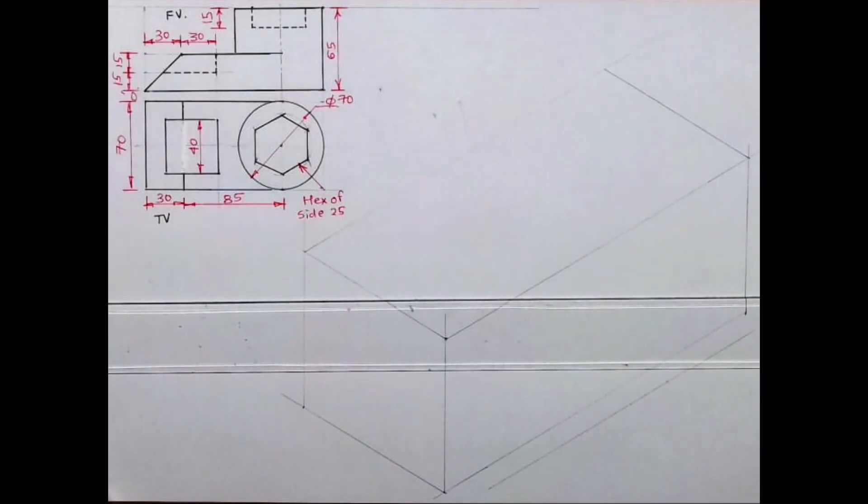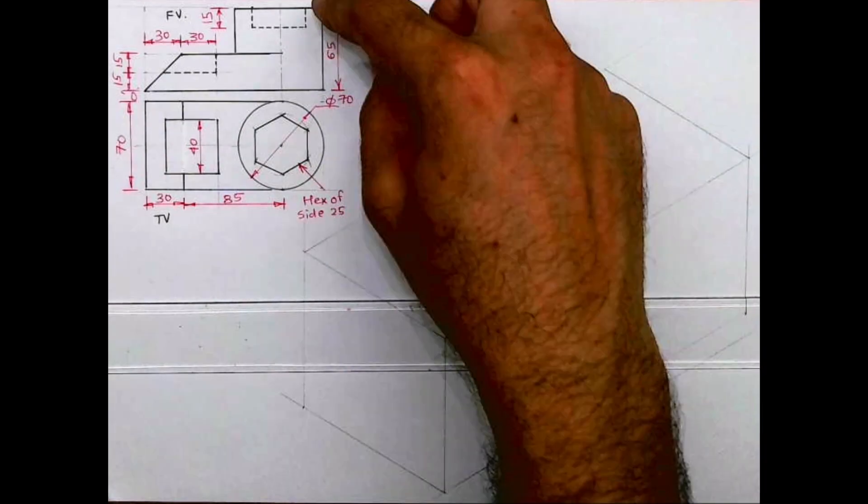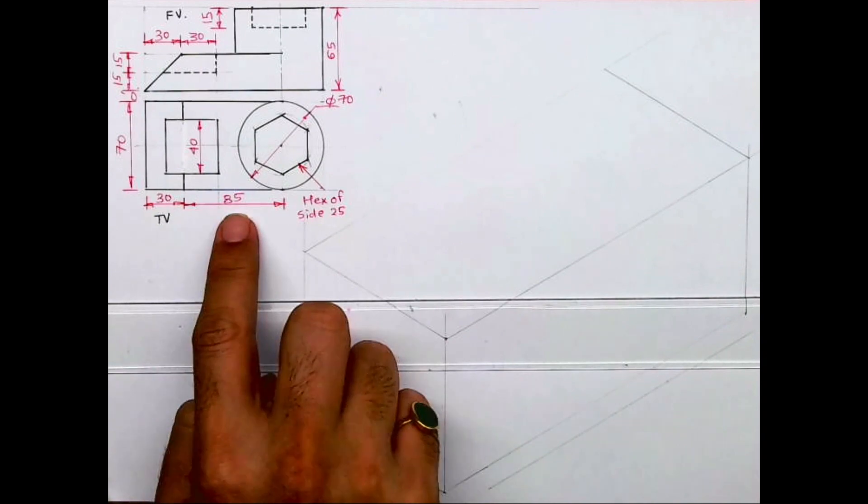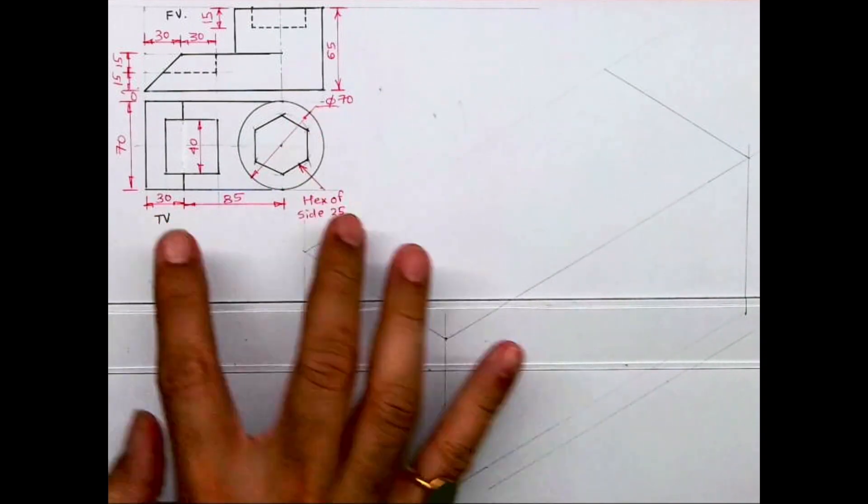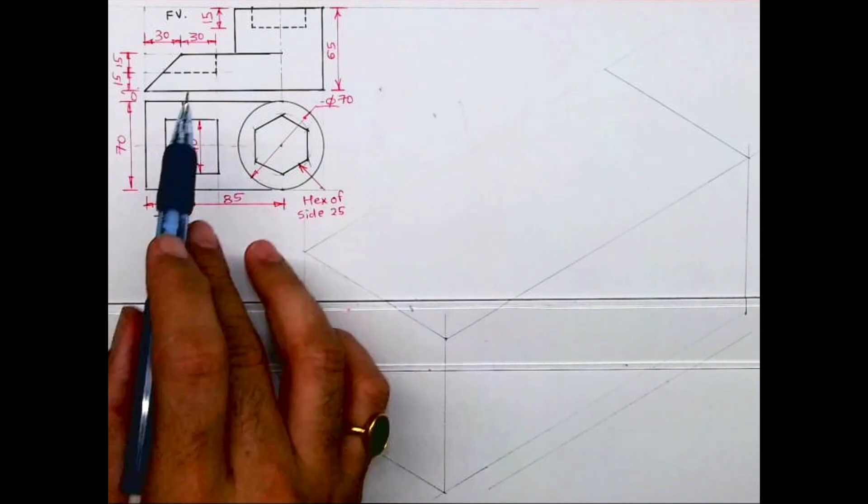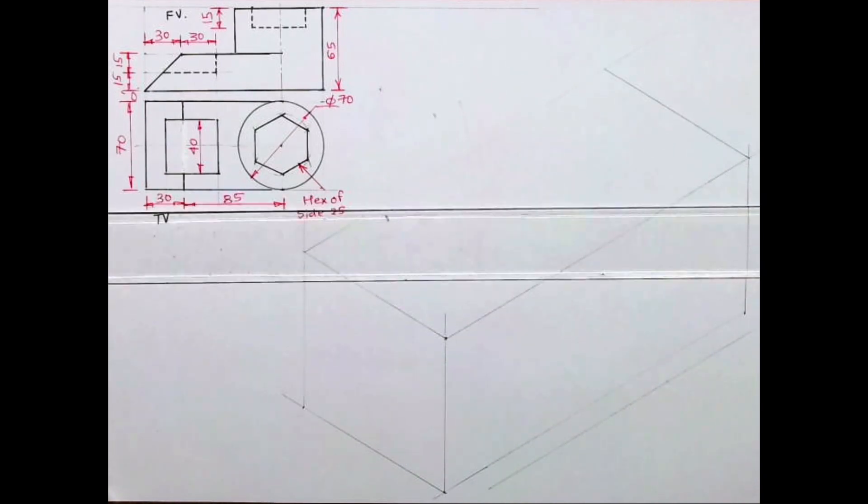Welcome to technical drawing. Today we'll see this sum in isometric. They have given you front view and top view. Now if you see origin, right inside: 150 height, 65 and width 70. So 30 plus 85 plus 35 will be 150, so it will come on right hand side. Now see there are two parts.